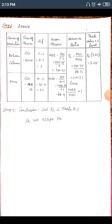The ANOVA table has columns: Source of Variation, Sum of Squares, Degrees of Freedom, Mean Square, Variance Ratio, and Table Value at 5% level of significance. For the 'Between Columns' row: SSC = 452.25, degrees of freedom = C − 1 = 4 − 1 = 3, and Mean Square of Column (MSC) = SSC/df = 452.25/3 = 150.75.